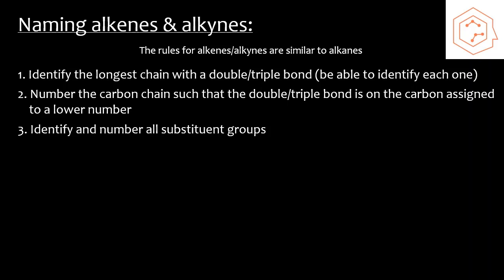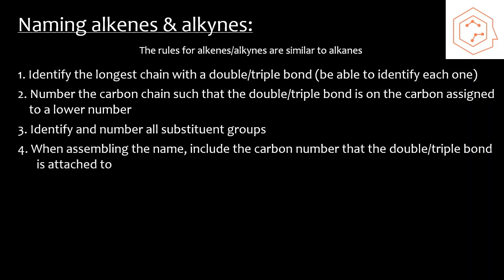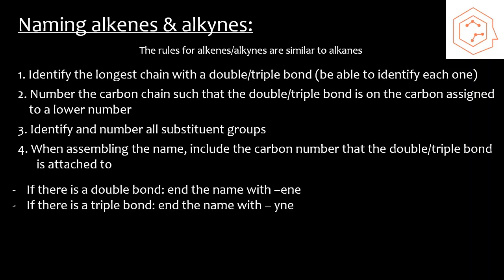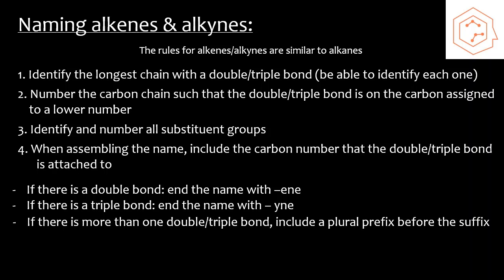When assembling the final name, put substituent groups first with their carbon numbers. To end the word, include the parent chain prefix and indicate the type and position of the bond. If there's a double bond, end the name with '-ene'; if there's a triple bond, end with '-yne'. If there's more than one double or triple bond, include a plural prefix before the suffix — so the ending could become '-diene' or '-triene'.